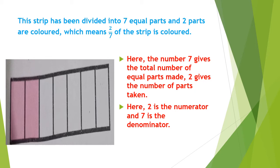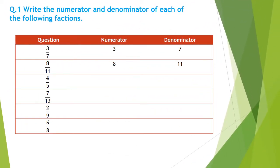Now we will do an exercise. This is question number one: Write the numerator and denominator of each of the following fractions. It is very easy, students. Question number one: three upon seven — numerator is three and the denominator is seven. Next, eight upon eleven — numerator is eight and denominator is eleven. I have solved two sums; you have to do the remaining with your own.